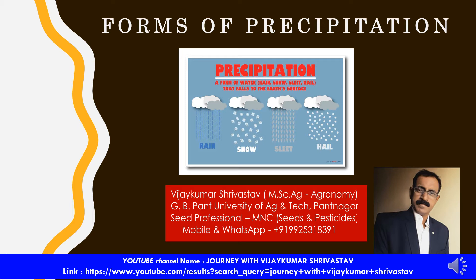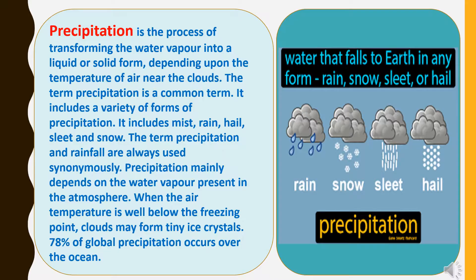Let's proceed to the presentation. Precipitation is the process of transforming water vapor into a liquid or solid form, depending upon the temperature of air near the clouds.